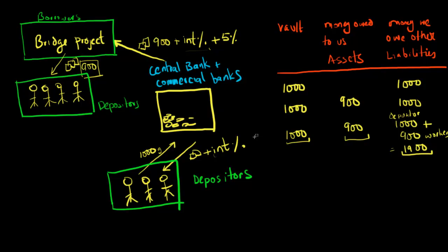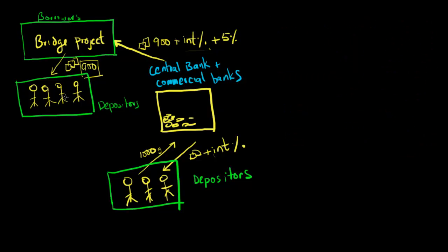In this video, we're going to talk about the effect that interest rates have on an economy. To do this, we're going to use the example we've been using for the last few videos. If you remember from our previous videos, these depositors down here were keeping their money, which was equal to 1,000 gold coins, with this commercial bank over here.